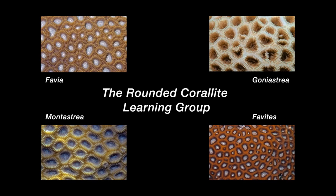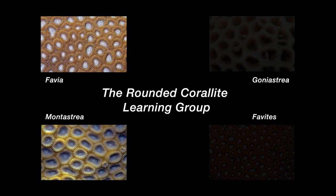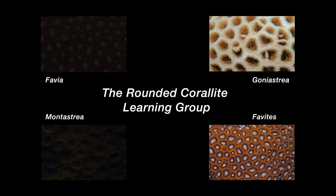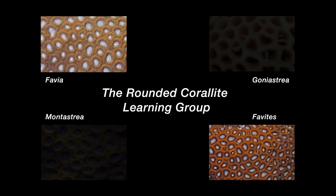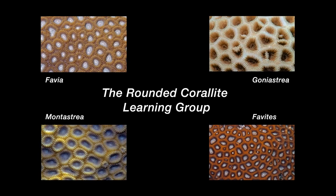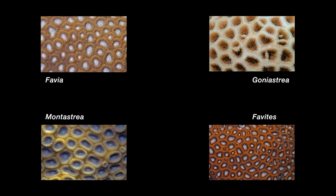Here's the problem. To the beginner, Fabia looks like Montastria, and Fervites looks like Goniastria. Sometimes Fabia can also look like Fervites. These genera are very common and generally easily separated once you know how. The recipe for the rounded coralite learning group requires some new terms related to the way the coral polyps clone themselves — a process called budding. Please look at the glossary page of your coral finder.